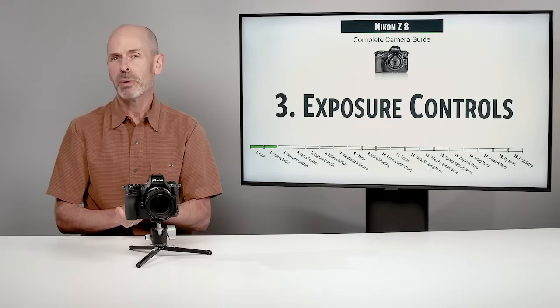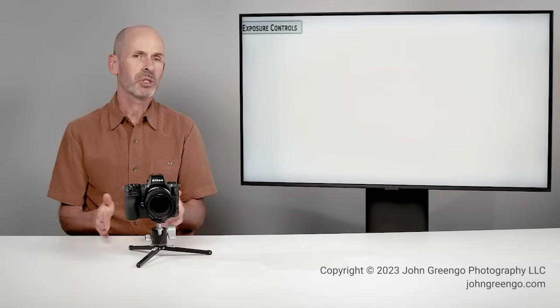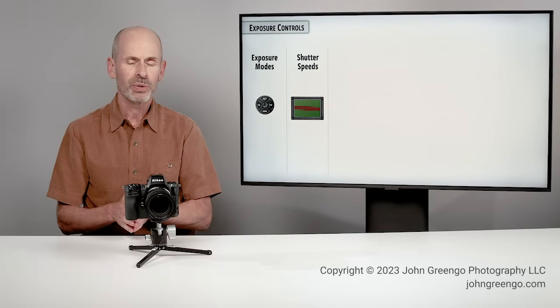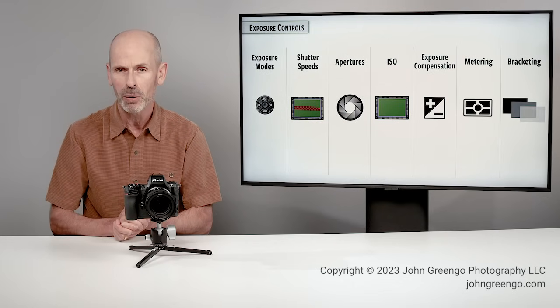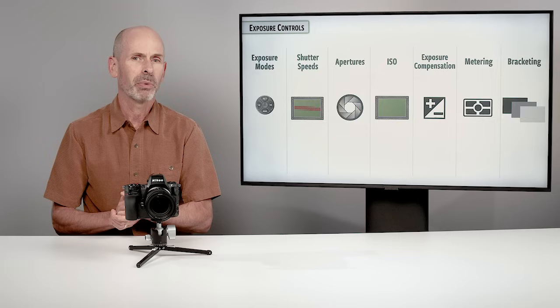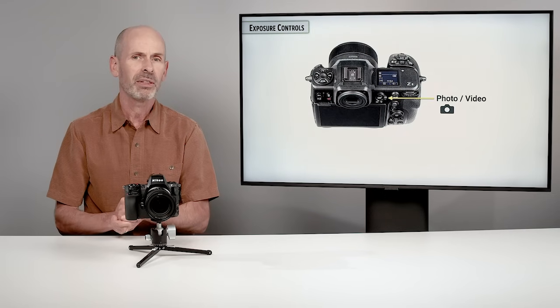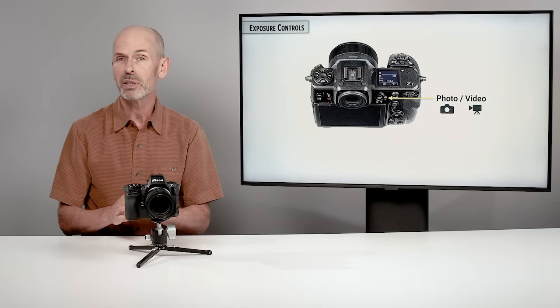Exposure controls — this is the big one. We're going to be talking about shutter speeds, apertures, ISOs, and everything else regarding exposure. Before we start diving into the important stuff, you need to check the photo/video switch on the back of your camera. If you are in video mode, the camera operates in a very different way — we'll cover video later in section nine.